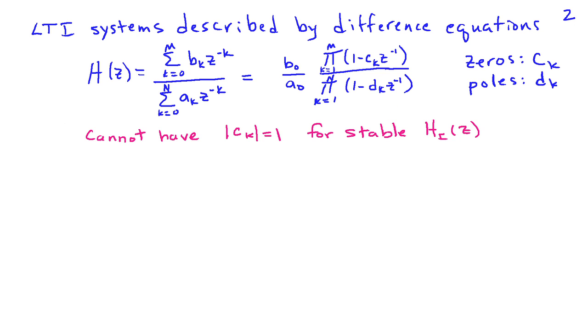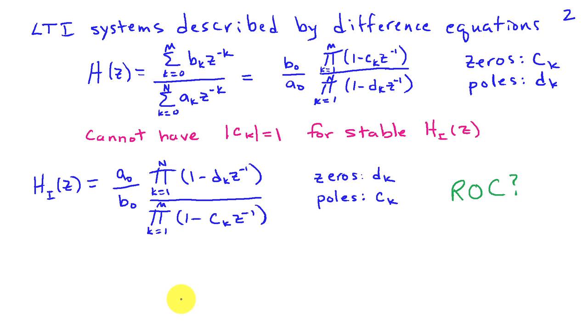Since we're not allowed to have the magnitude of H of z go to 0 on the unit circle, clearly we cannot have any zeros with unit magnitude because H of e to j omega would go to 0 at that point. The inverse system can be obtained by remembering that H of z times HI of z has to be equal to 1, so HI of z is a0 over b0, and in the numerator we have the product of the poles of the original system, whereas in the denominator we have the product of the zeros of the original system.